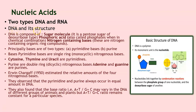Let us look at the structure of DNA. DNA is composed of a sugar molecule — a pentose sugar of the deoxyribose type — a phosphoric group also called phosphate when in chemical combination, and a nitrogen-containing base, which is a nitrogen-containing organic ring compound. These are the three components that form the entire structure of DNA: the phosphate group, the deoxyribose sugar, and the base.